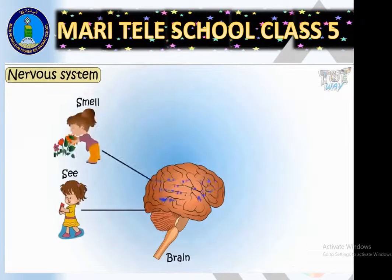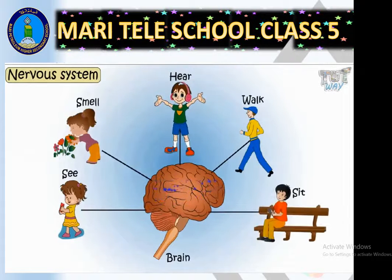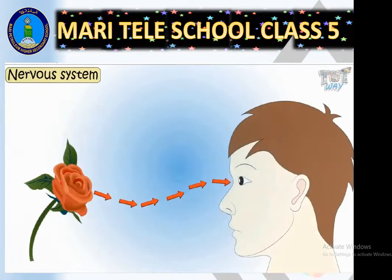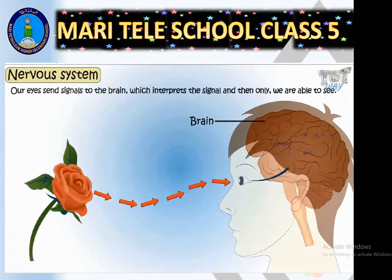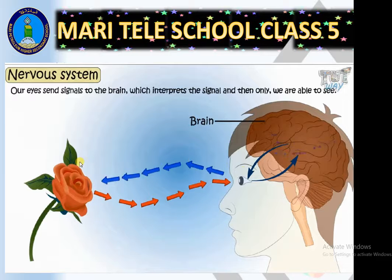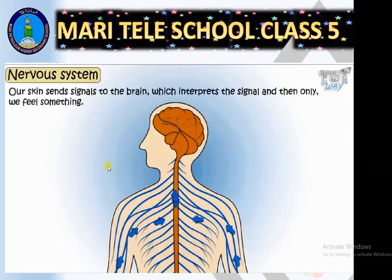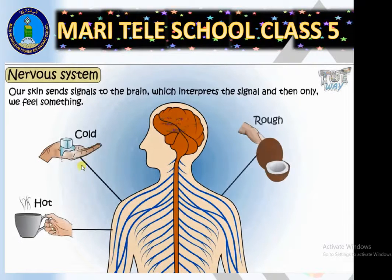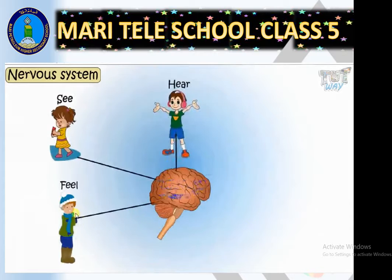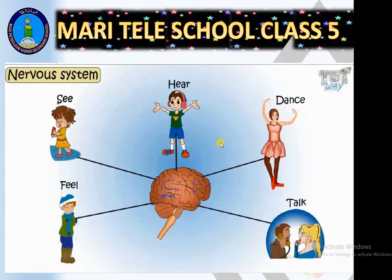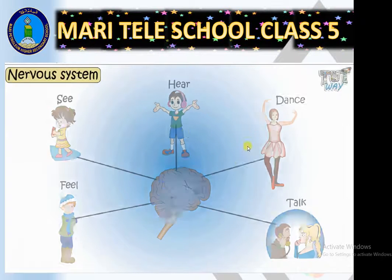This is the brain, through which we can see, smell, hear, walk, or sit. We consider that we see with our eyes, but the brain is involved behind everything. Our eyes actually send signals to the brain, which interprets the signal, and then only we are able to see. Similarly, our skin sends signals to the brain, which interprets the signal and then we feel something hot, cold, rough, smooth, or soft.